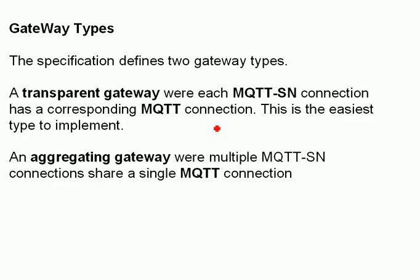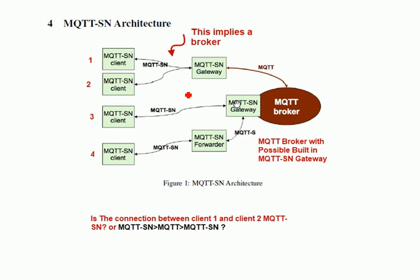The specification defines two gateway types. A transparent gateway, where each MQTT-SN connection has a corresponding MQTT connection — a one-to-one relationship. That means there'd be a separate connection for each client to the broker.